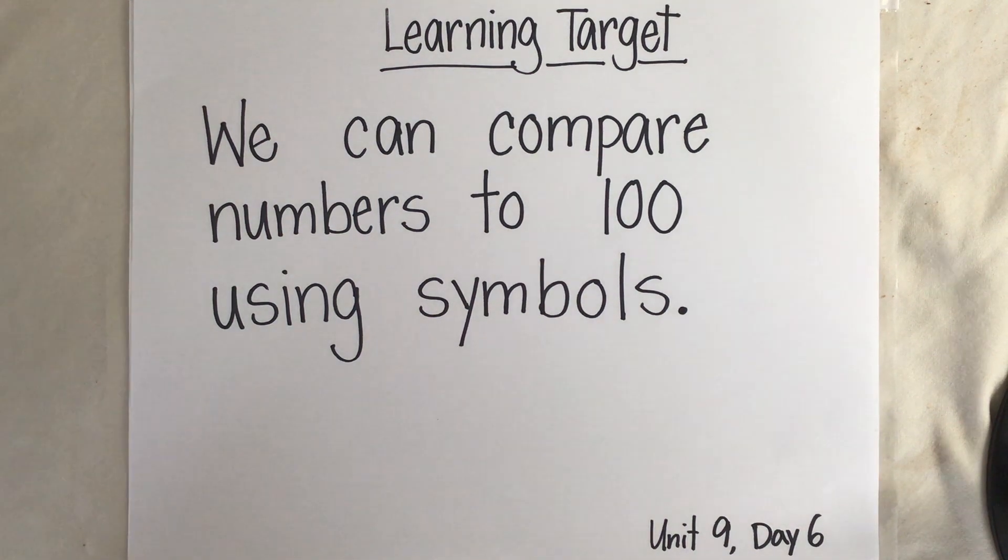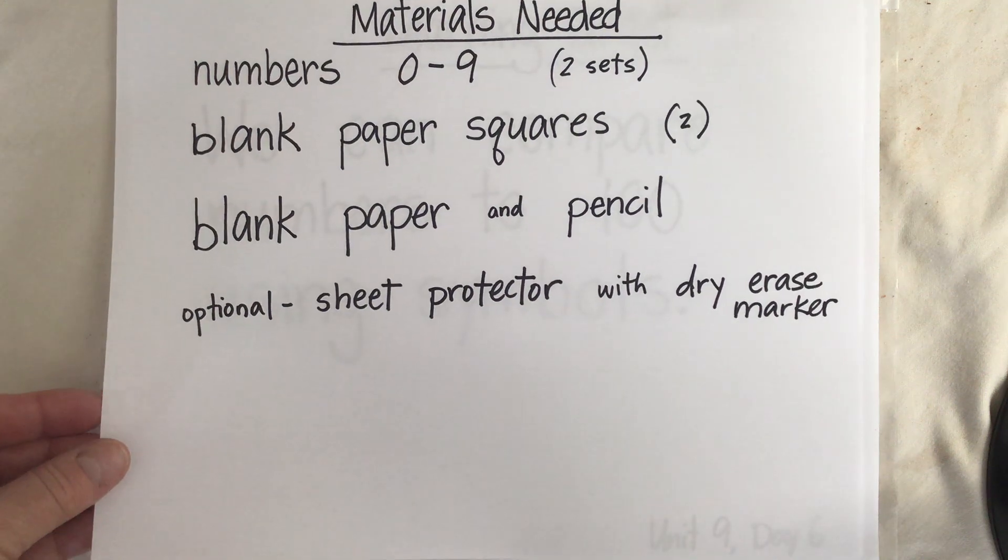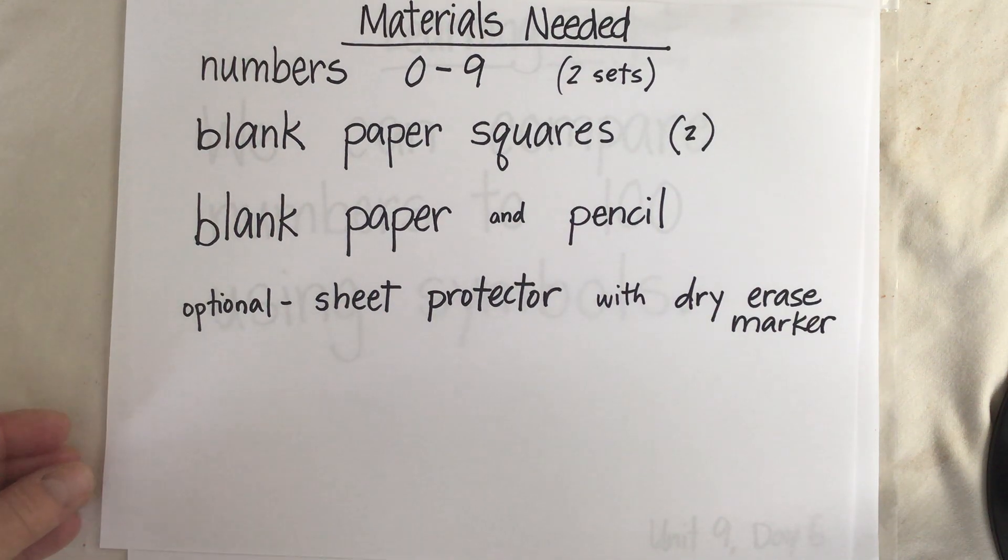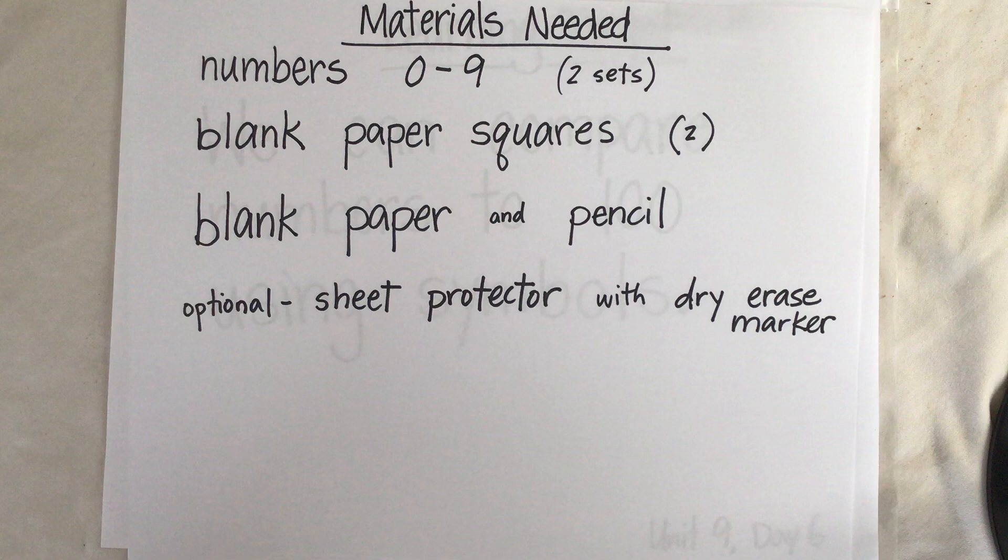The materials you're going to need today are a set of numbers 0 to 9, blank paper squares, blank paper and a pencil, and a sheet protector if you need. So stop the video here and go get some supplies.